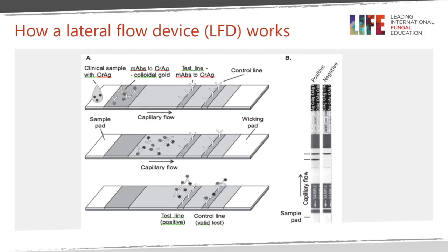To remind you, a lateral flow test is carefully built. You have a test line and a control line — the test line detecting the antigen from the infection you're interested in, and the control line to check that the sample has flowed correctly and the test is working. The sample goes on the sample pad and gradually migrates down through the test, absorbed in the wicking pad at the far end. Monoclonal antibodies linked to colloidal gold bind to cryptococcal antigen if present, and are detected as the sample and conjugates move further down to the test line.